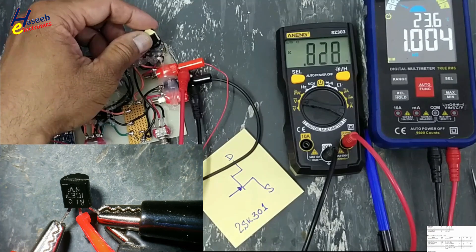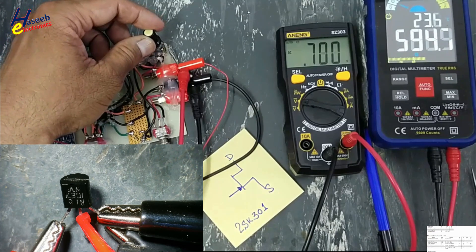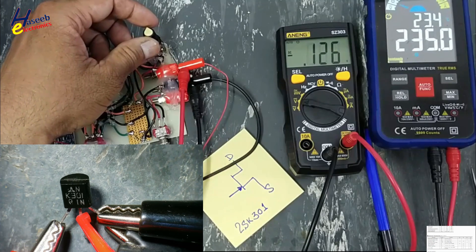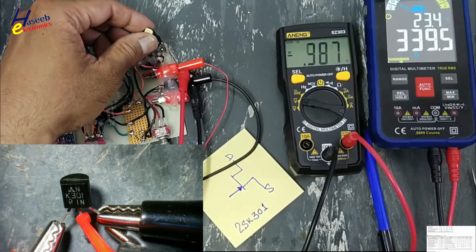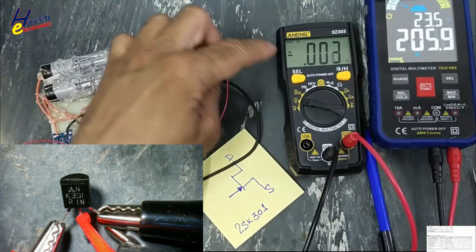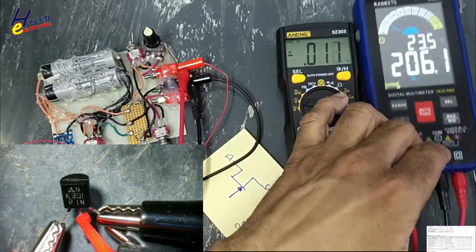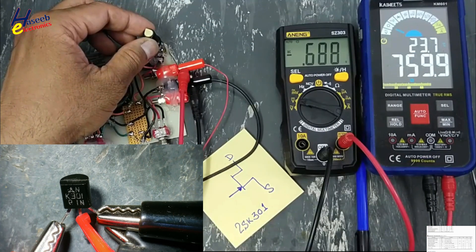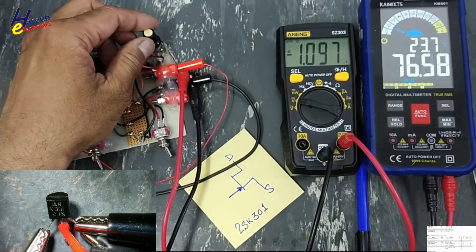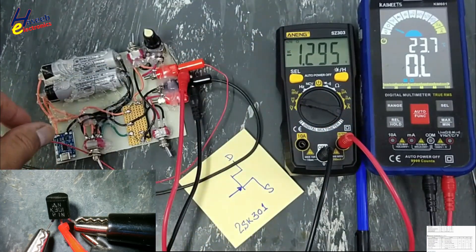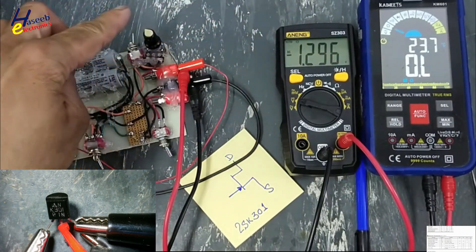Now we will decrease the gate biasing. At around 0 volts, the normal channel resistance is 200 ohms. Now we will decrease the signal into the negative side. When minus 1 volt is applied, the resistance reads 7 megaohms, and now OL — open circuit. It is now in the cutoff state. Maximum 5 volts are mentioned in the datasheet.